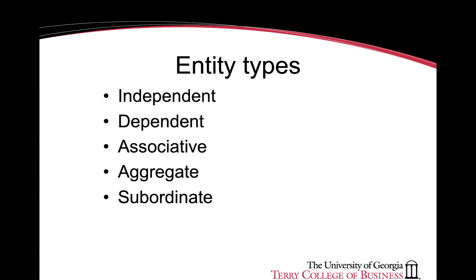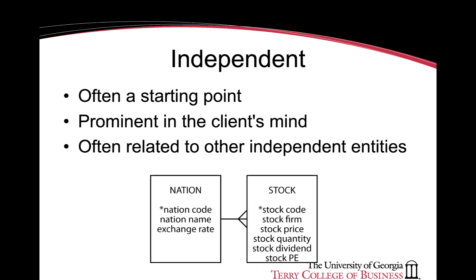When one thinks of the different entities that one can represent in a data model, there are several types: independent, dependent, associative, aggregate, and subordinate entities are some of the different types of entities that can be captured in a data model.